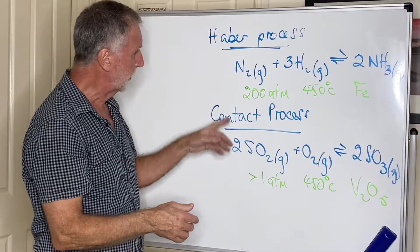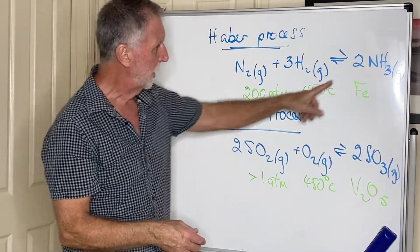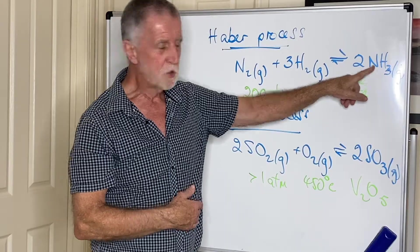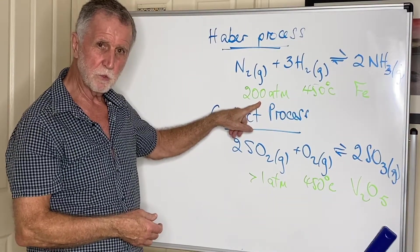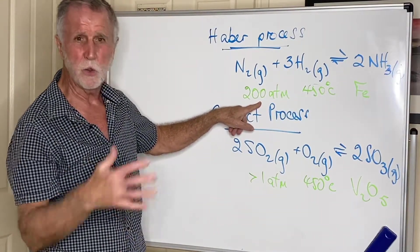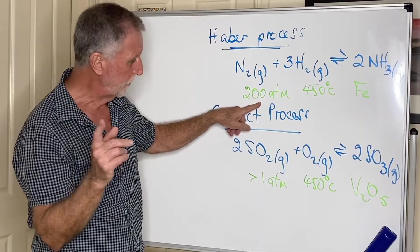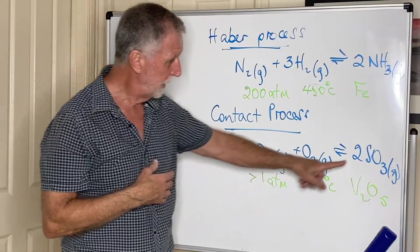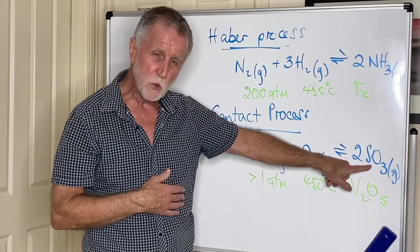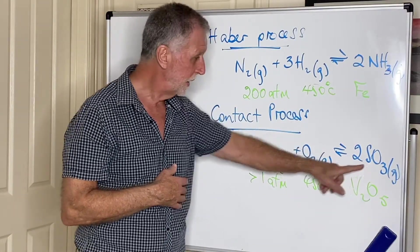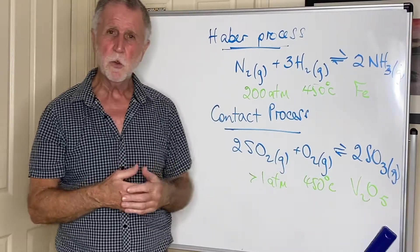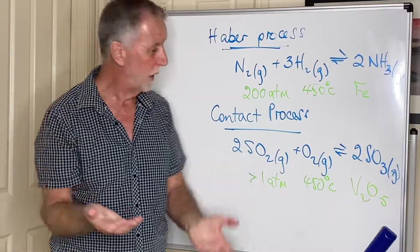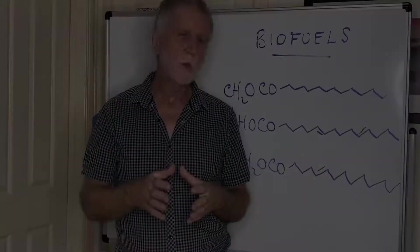In the Haber process, even with that pressure, the yield of ammonia is probably no more than 20 percent, so you need that high pressure; otherwise the yield is so low it's not worth having. However, at just over atmospheric pressure, the yield of sulfur trioxide is almost 100 percent, so clearly you don't need to use a high pressure. You don't use high pressure unless you have to, and you don't have to here.